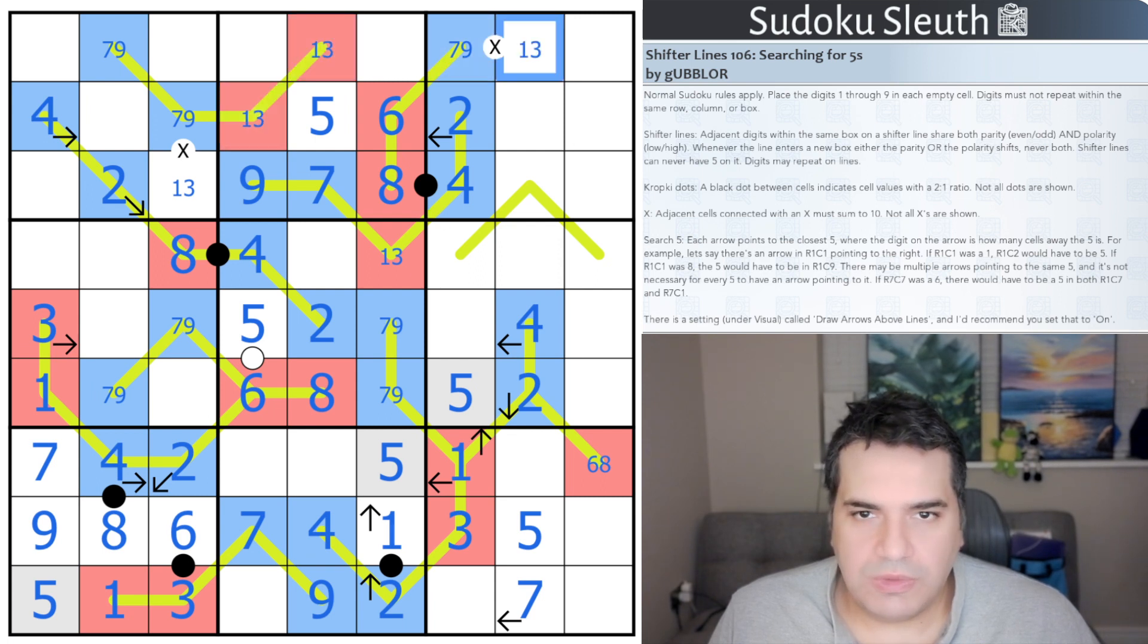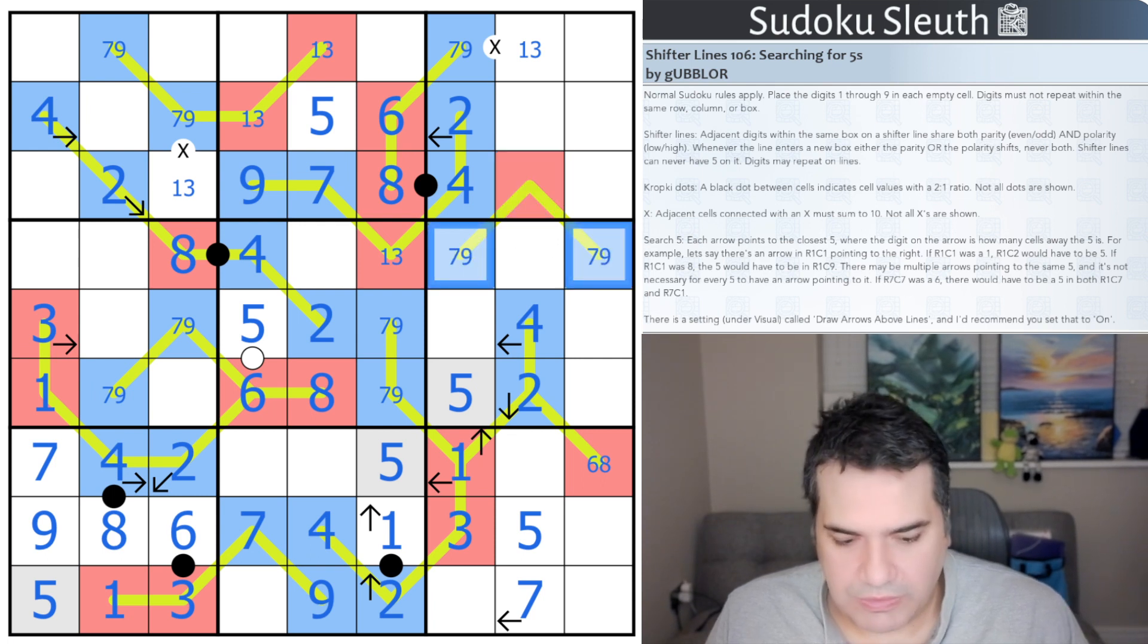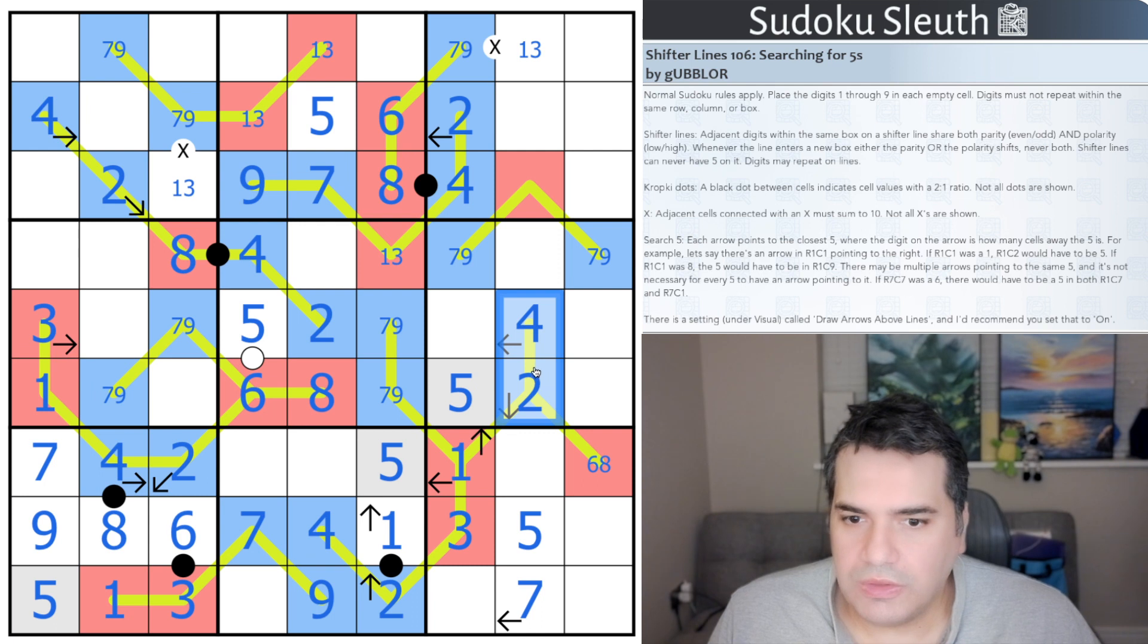They are seven and nine because we've already placed two and four in here. And we've colored all of the shifted lines. And so right now it's just probably simple Sudoku to bring all of this home.